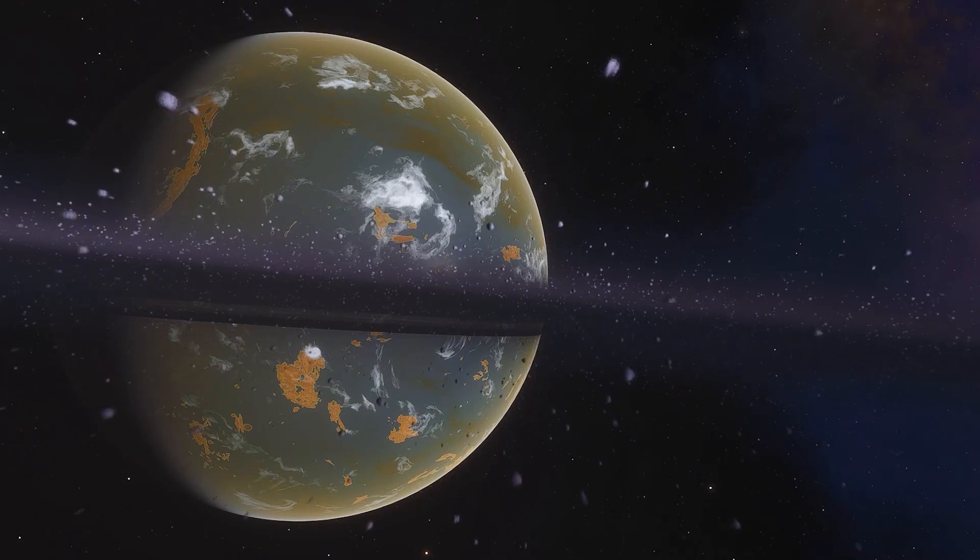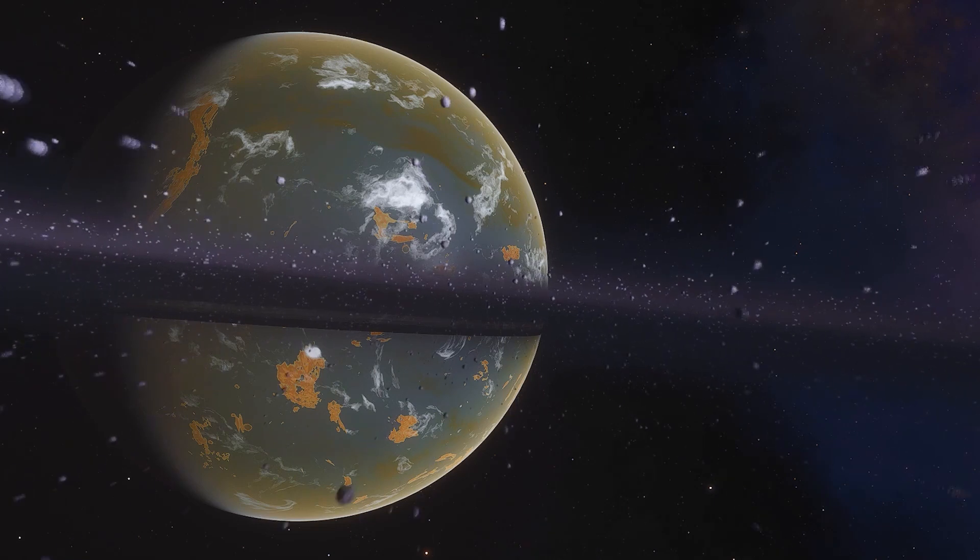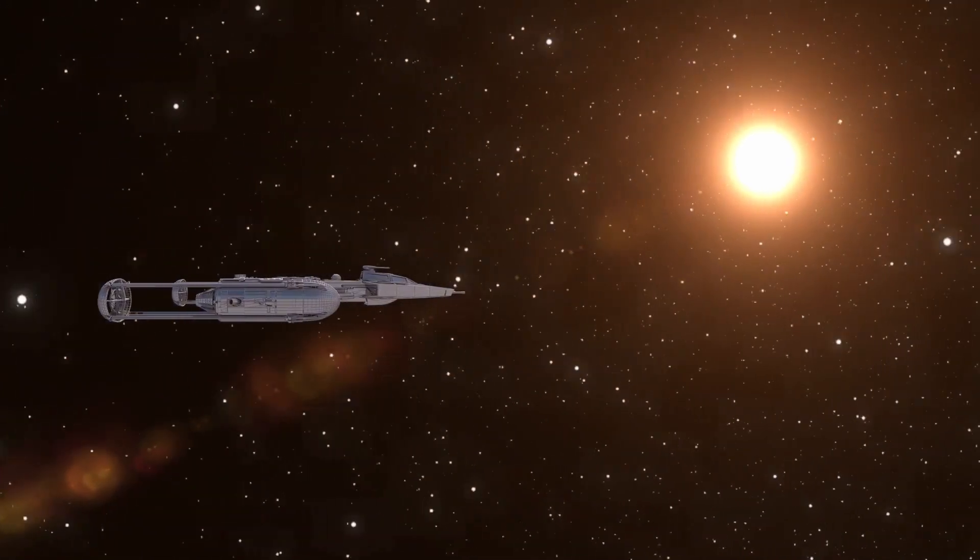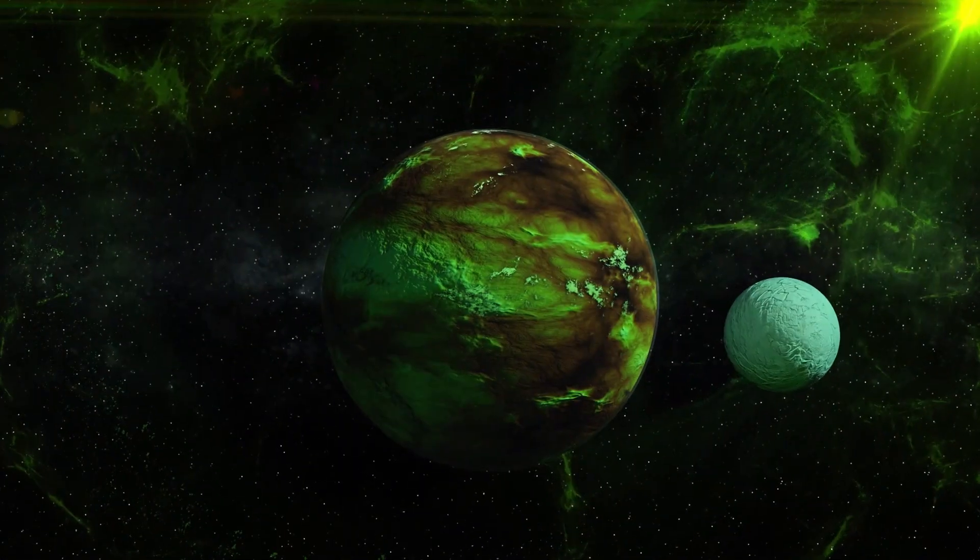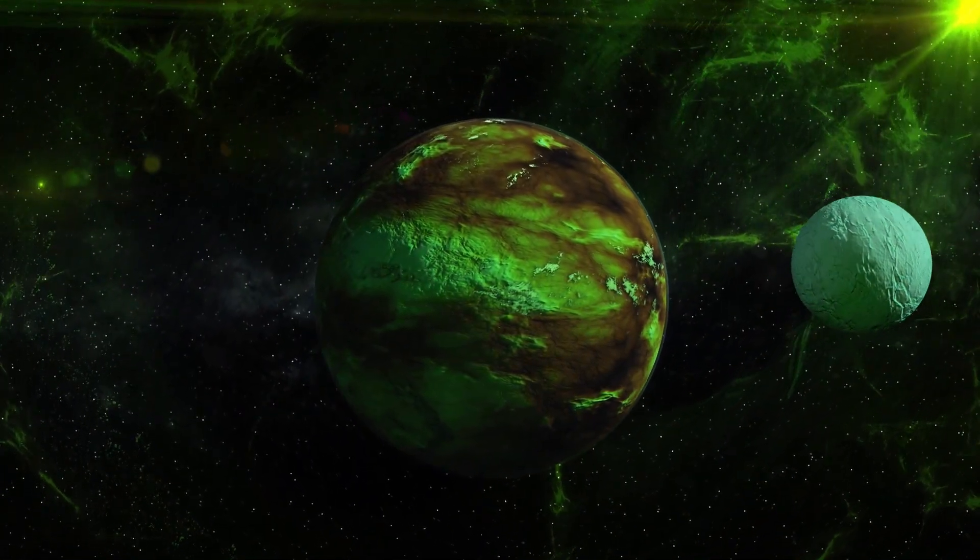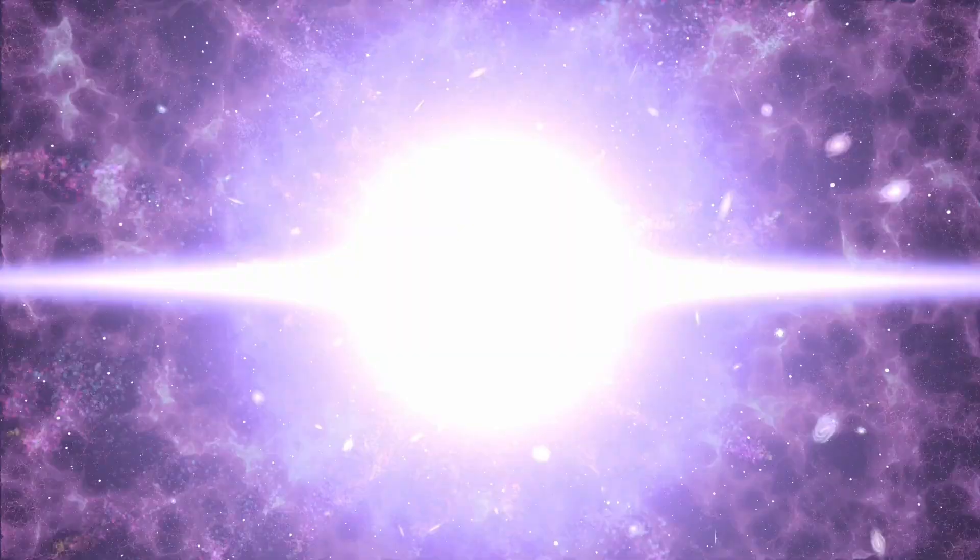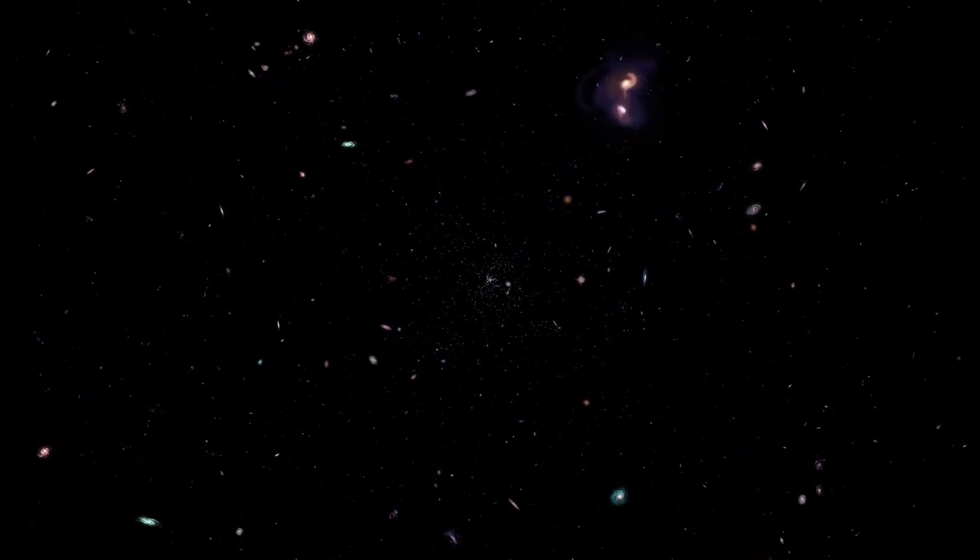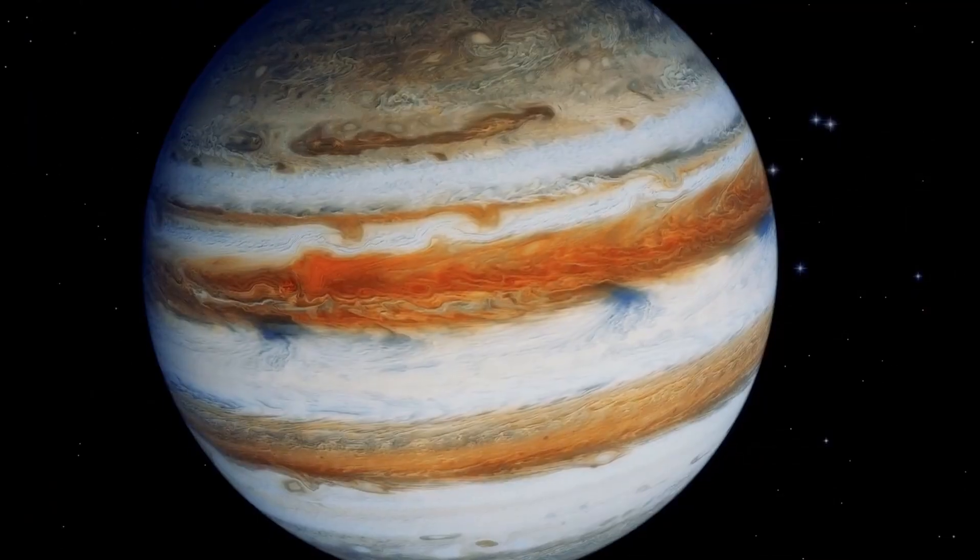Now we have the oldest planet in the universe, PSR B1620-26b, is an exoplanet located approximately 12,400 light years from Earth in the constellation of Scorpius. It is also known as Methuselah. The planet is one of the oldest known extrasolar planets, believed to be about 12.7 billion years old.